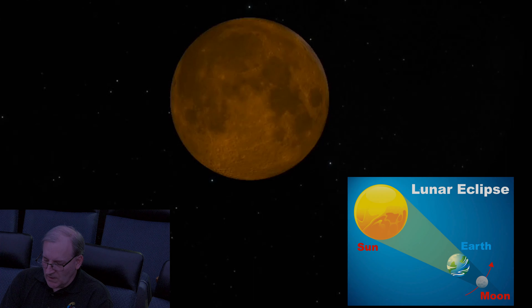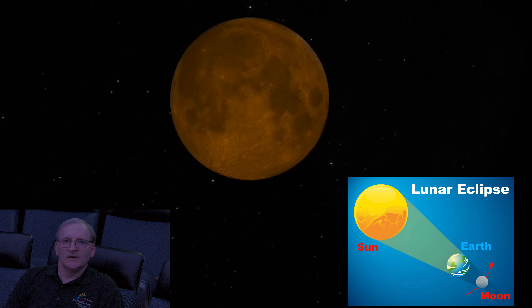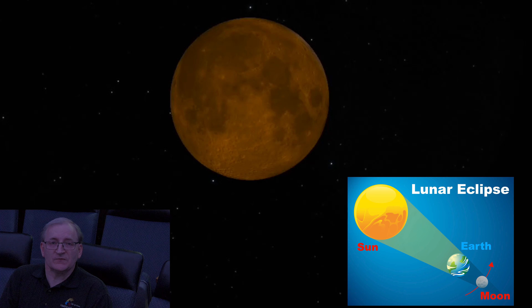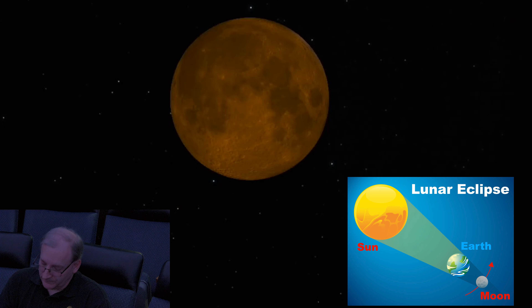A lunar eclipse occurs when the Earth actually passes in between the moon and the sun, and it is the Earth that blocks out sunlight from the moon. If you were standing on the surface of the moon watching this eclipse, it would appear as a total solar eclipse — but we're not.